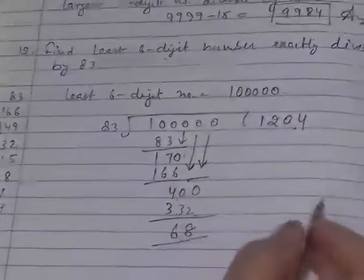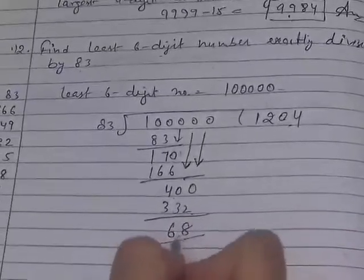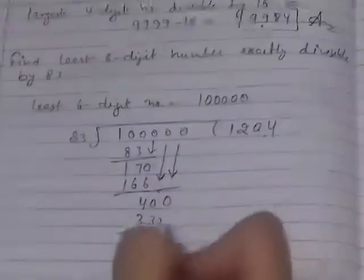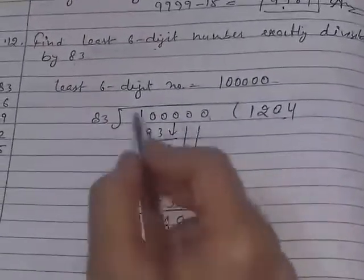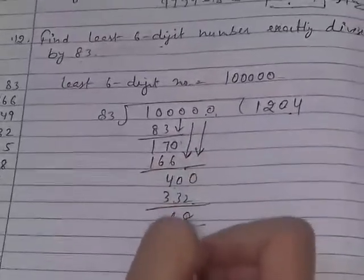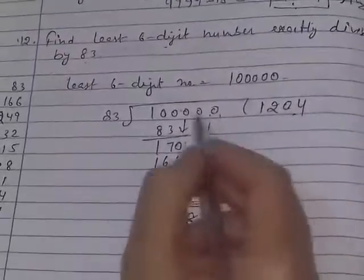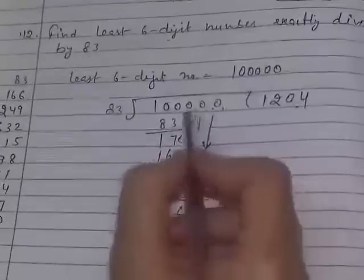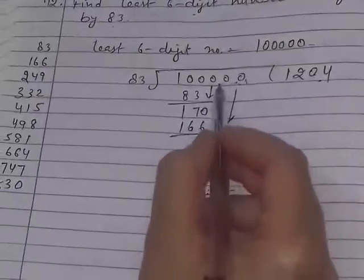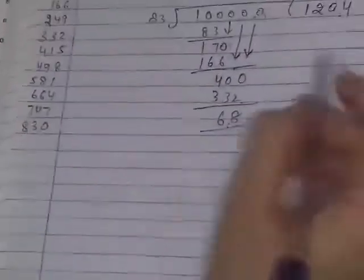Now the least number which is exactly divisible by 83 - it is not exactly divisible. When it will be exactly divisible? If we subtract 68 from this, then it will not be a 6 digit number. After subtraction it will become a 5 digit number, but we need a 6 digit number. So we will add something to it.